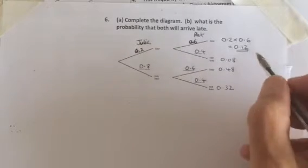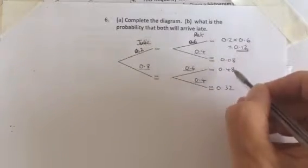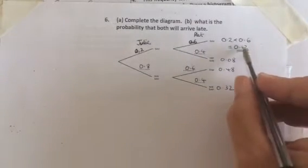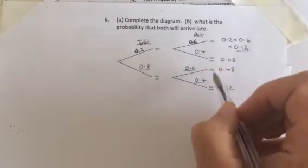Now, a good thing to do is to check what these four numbers add up to. What should they add up to? That's right, these numbers should always add up to 1, because one of these options must occur.